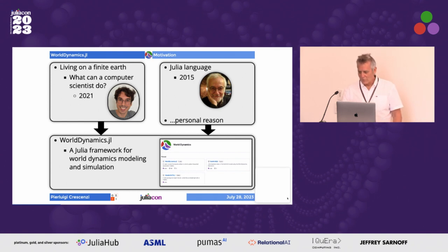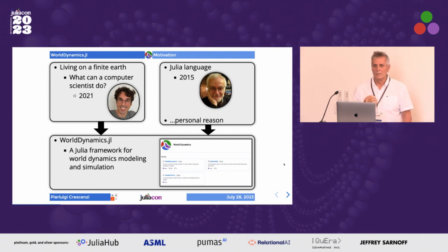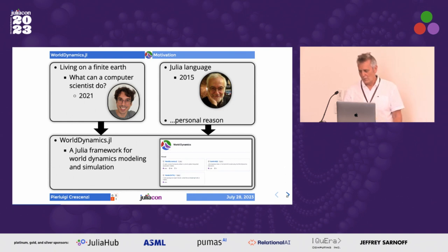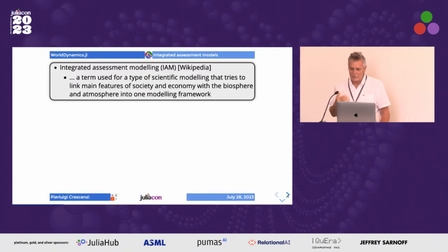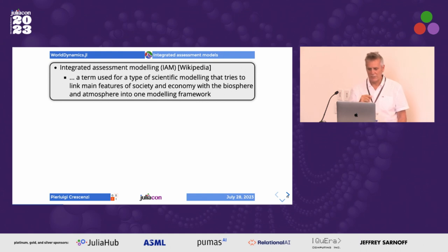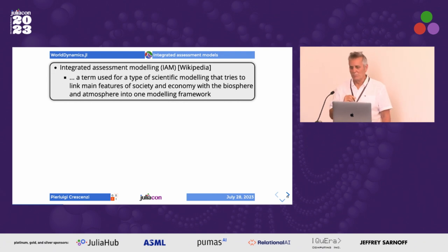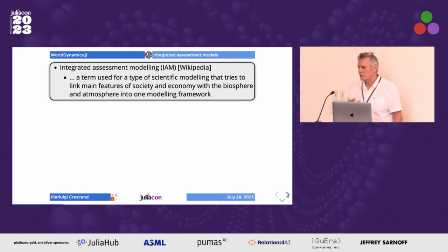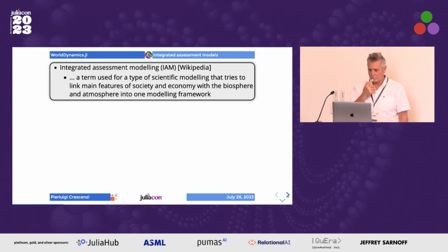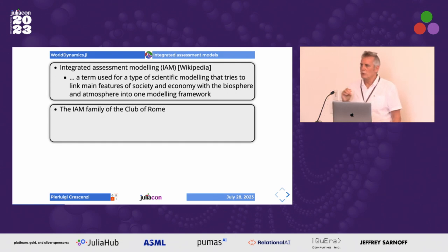If you look for the problem of modeling and simulating the dynamics of a world in which you have finite non-renewable resources, you immediately find references to what are now called Integrated Assessment Models. In Wikipedia's words, this is a term used for a type of scientific modeling that tries to link main features of society and economy with the biosphere and atmosphere into one modeling framework. This is quite an ambitious goal, and many people have proposed several IAMs.